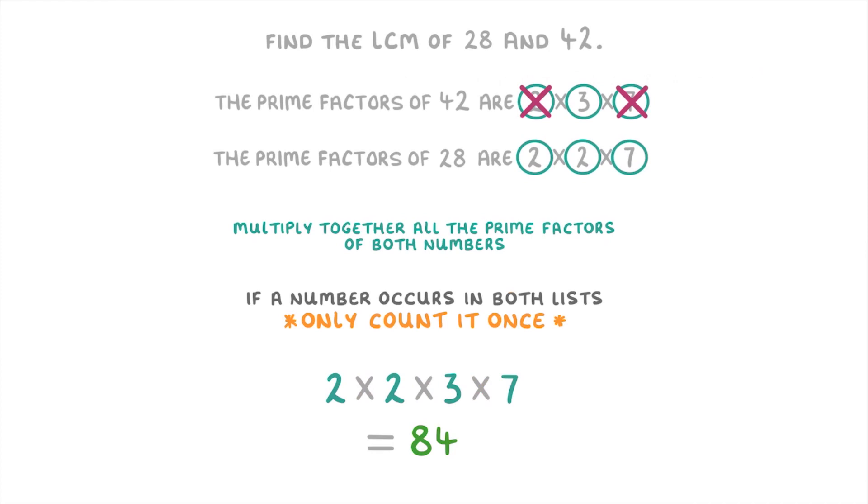And if you want to check this, we could have a look at these two lists, which are the multiples of 28 and 42. And you can see that 84 is the one that occurs in both. So it is the lowest common multiple.